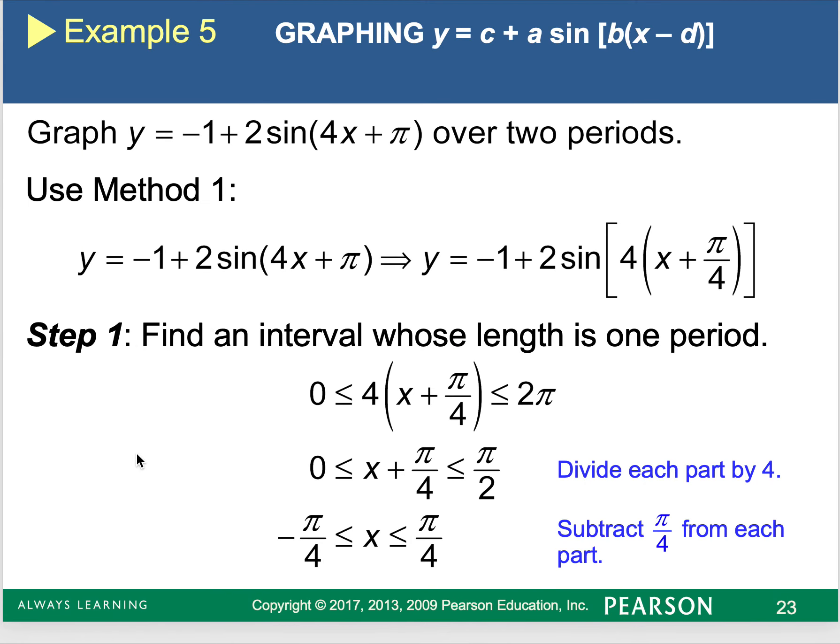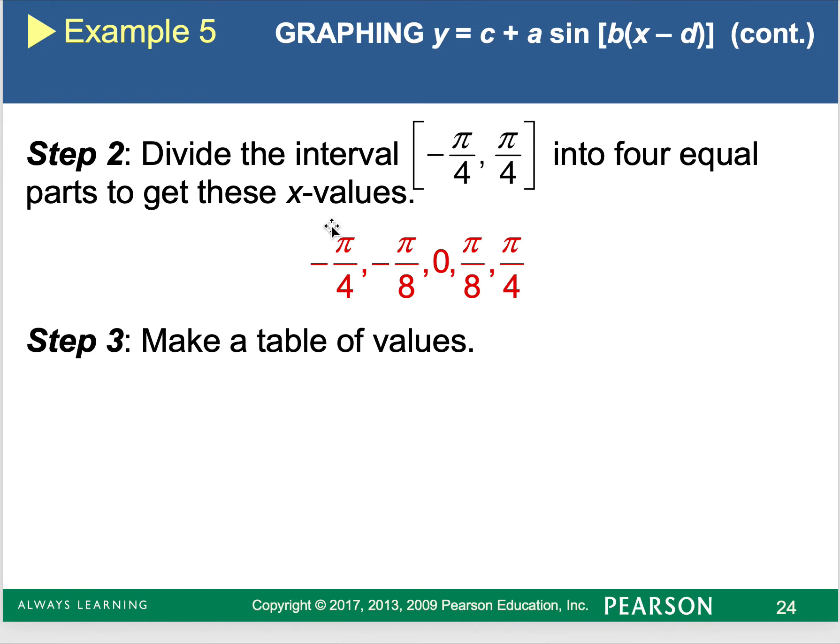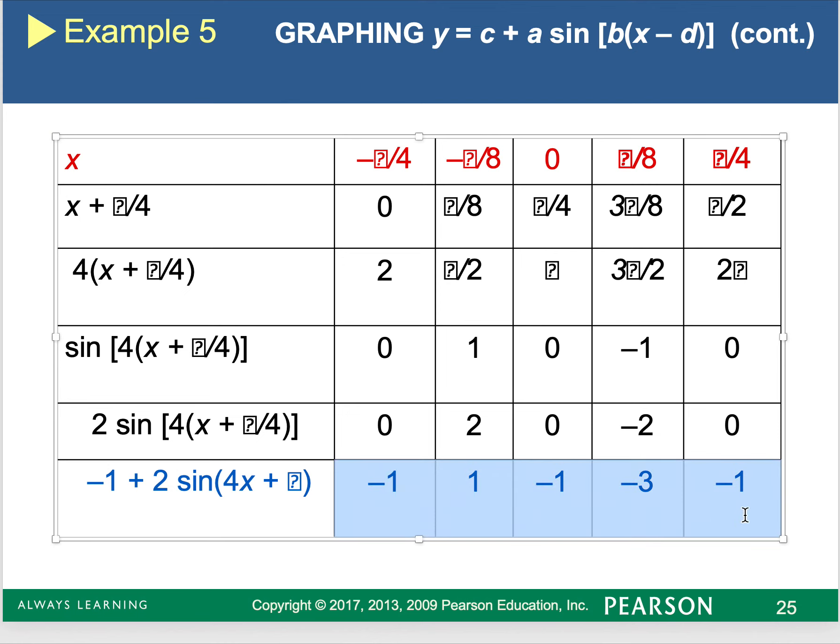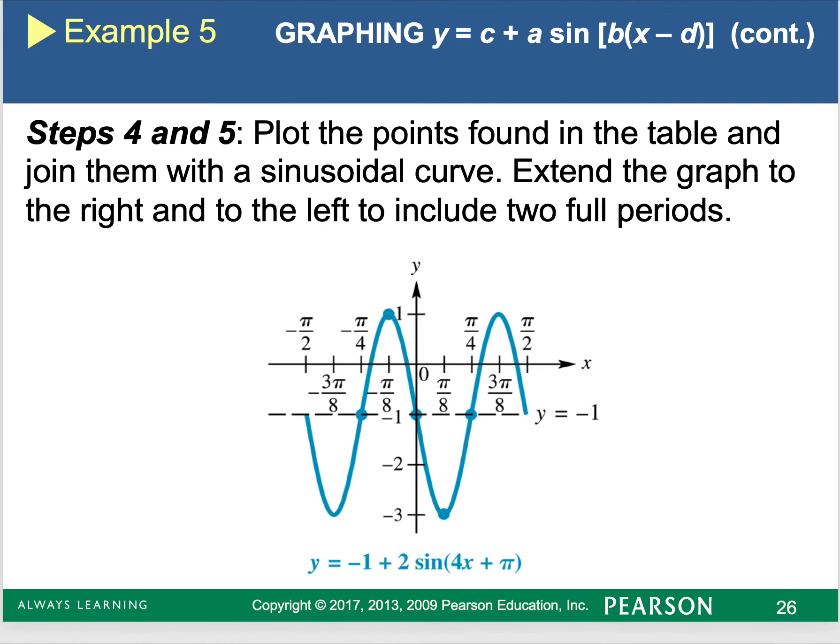So here's another example of graphing negative one plus two, and we have a phase shift. So my amplitude is two, my period is 2π over four, which would be π over two, I'm shifting it left π down one. So we could start by forming that interval in the inequality. And then we're working to solve for x. Once I solve for x, I get that it's between negative π over four and π over four. I'm going to take that and divide it into four equal parts. Then I'm going to make my table to get my final y values. And I'm going to plot it. So that's how I'm going to work with these shifts that are happening.